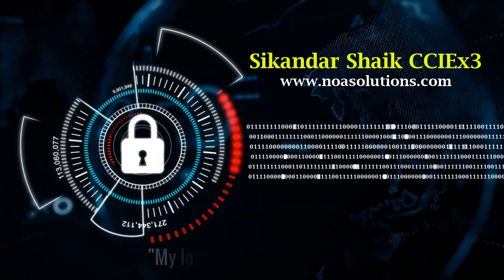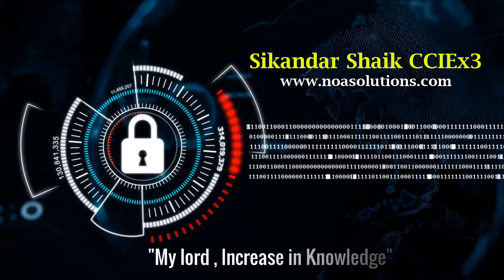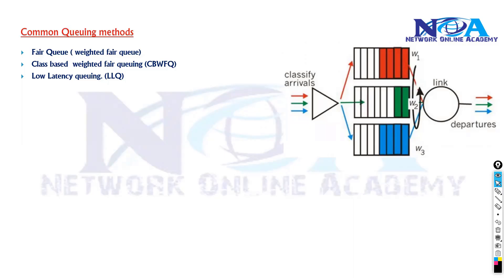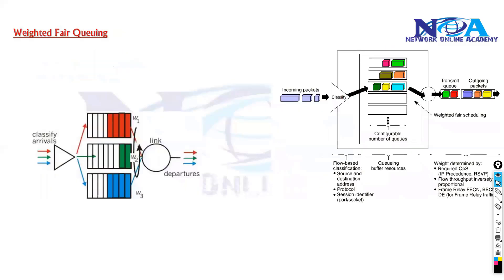Bismillahirrahmanirrahim. In today's networks, the commonly used queuing mechanisms — we have three options. We'll be using a combination of these different queuing mechanisms. First, we'll try to understand fair queuing, also called weighted fair queuing, where we add some weightage to it.